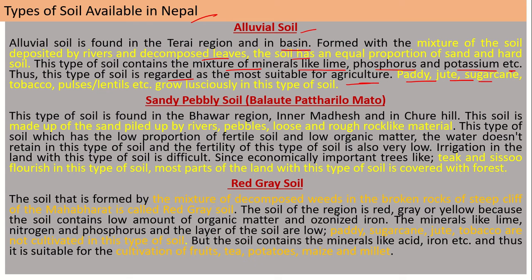Thus this type of soil is regarded as the most suitable for agriculture. Paddy, wheat, sugarcane, tobacco, pulses, and lentils are grown abundantly in this type of soil.